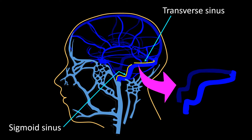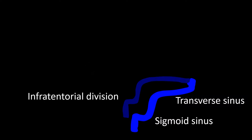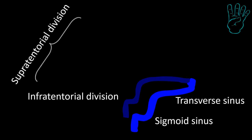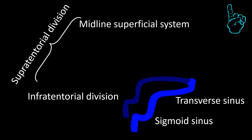I have now enlarged and isolated these structures — the right and left transverse and sigmoid sinuses. It is into these sinuses that the two divisions of the intracranial brain draining system, the infratentorial division and the supratentorial division, drain. The supratentorial division has four constituents, which we will refer to as systems. The first I will address is the midline superficial system, which drains at the junction of the right and left transverse sinus — a site called the confluence of the sinuses or the torcular herophili.